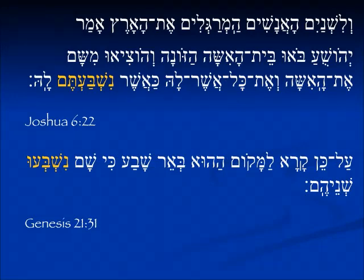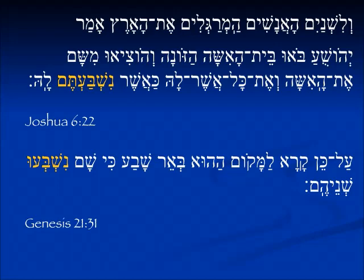In Joshua 6:22, Joshua is talking to the two spies that have come out of Rahab's house. They have made a promise to her to rescue her during the siege. It says ka asher nishbatem lah — as you have sworn to her, all y'all, both spies. In Genesis 21:31, Abraham and Abimelech are making a treaty, swearing an oath. We see this form — they swore, the two of them, at Be'er Sheva — kisham nishba'u shneihem.